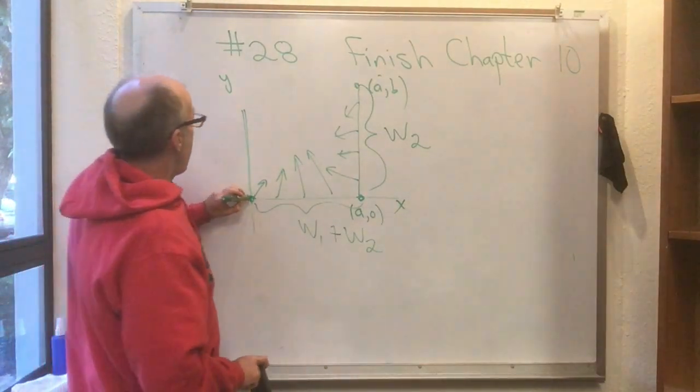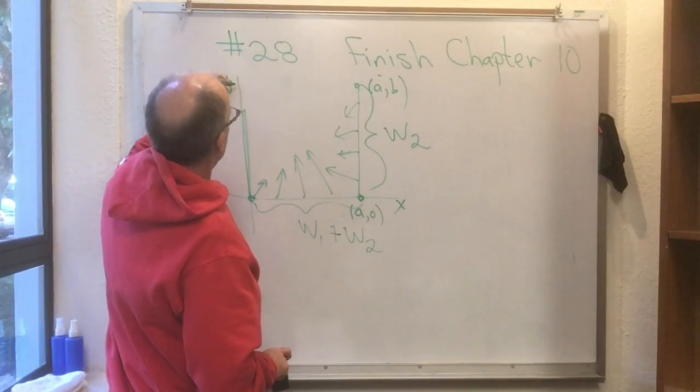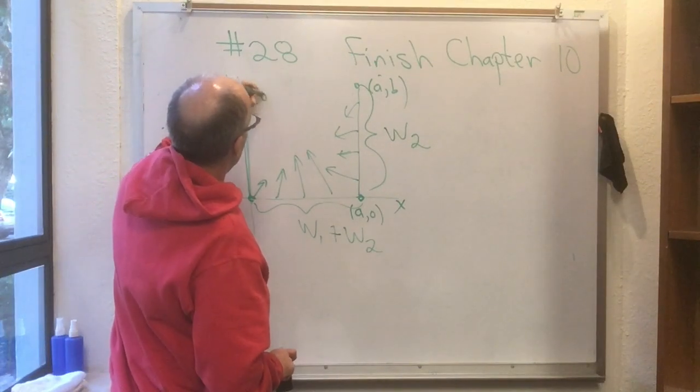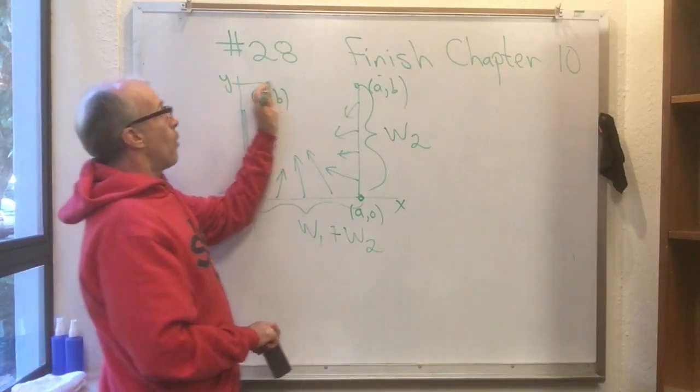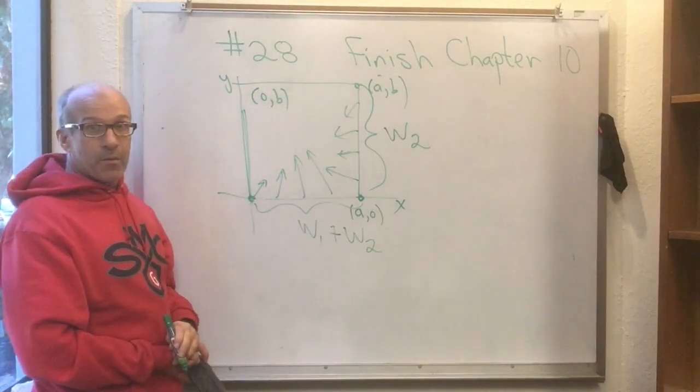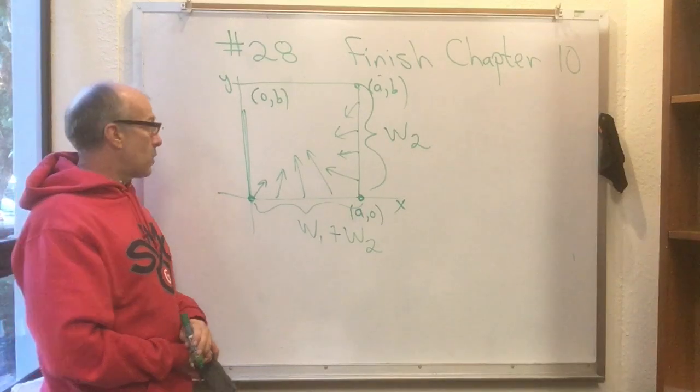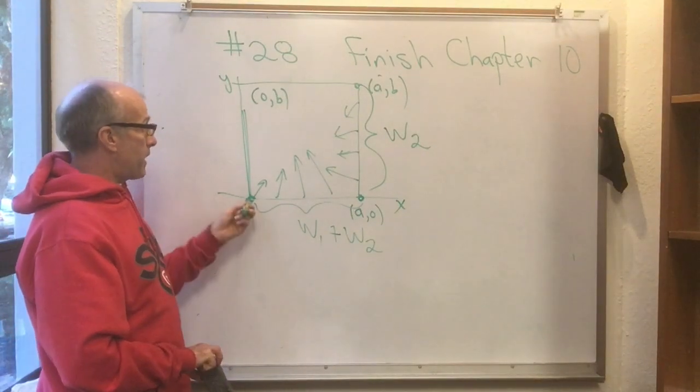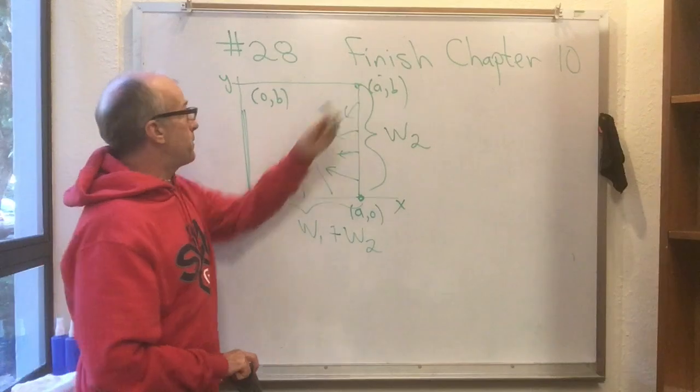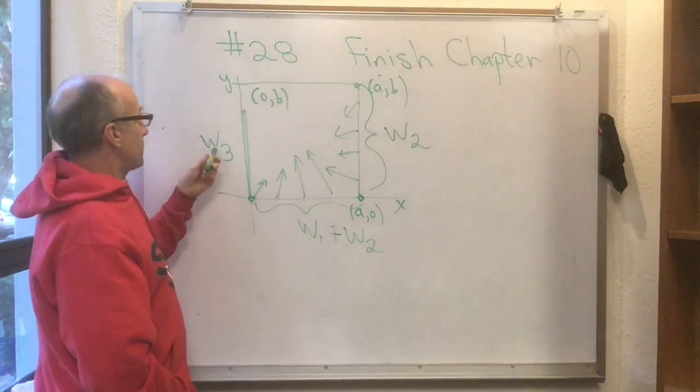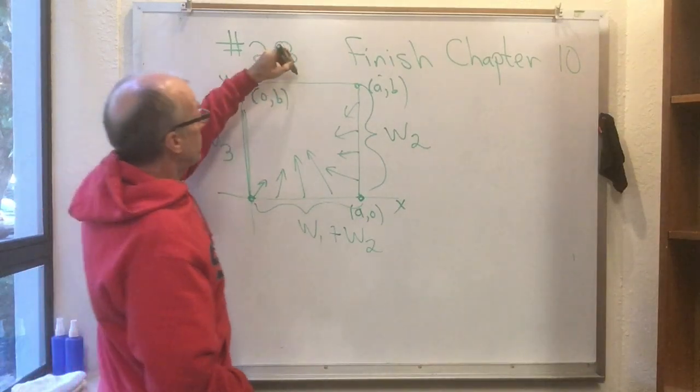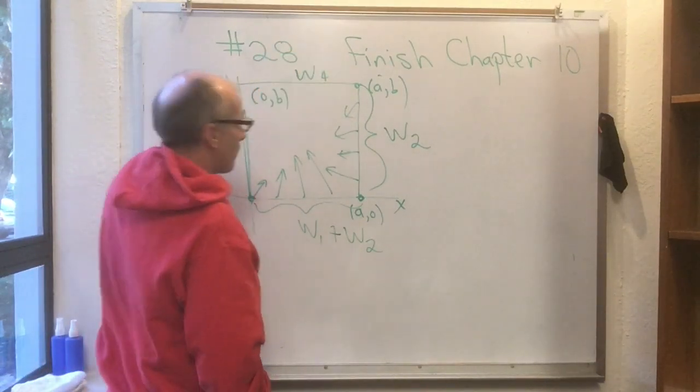But of course I could have gone up first to the point 0 comma B, and then I could have gone over to the point A comma B. So that's a totally legitimate different way of getting from 0, 0 to A, B. And so I could calculate the work going that way. And this would be W3 and that would be W4.